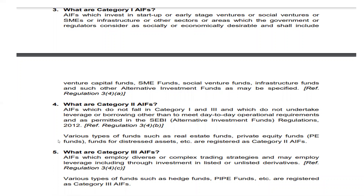Category one funds invest in startups or early-stage ventures, social ventures, SMEs (small and medium enterprises), infrastructure, or other sectors which the government or regulators consider socially and economically desirable. Category one includes venture capital funds, SME funds, social venture funds, and infrastructure funds. Venture capital is one type of AIF category one.